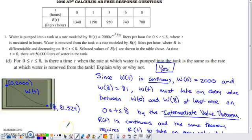In the last part of this, the last part is kind of, in my opinion, the trickiest part. It says, from zero to eight, is there a time when the rate at which water is pumped into the tank is the same as the rate at which water is removed from the tank? So basically, they're saying, does W(t) ever equal R(t) somewhere within the interval from zero to eight?